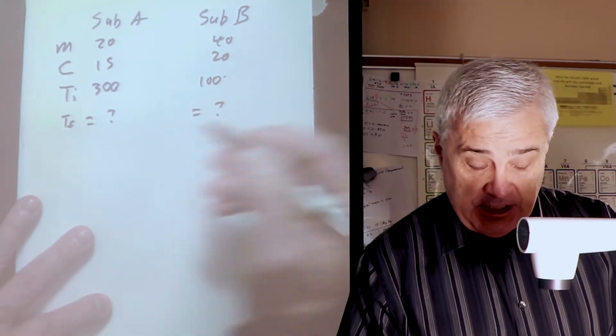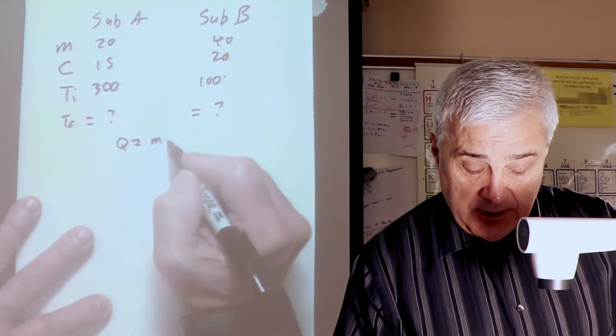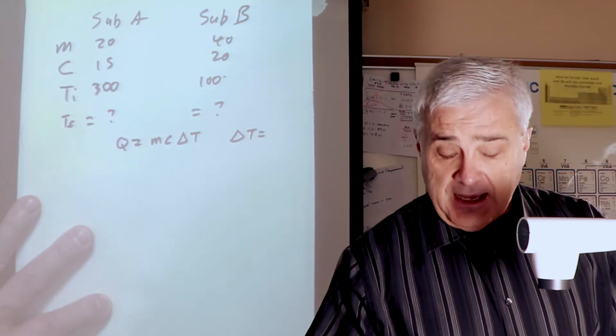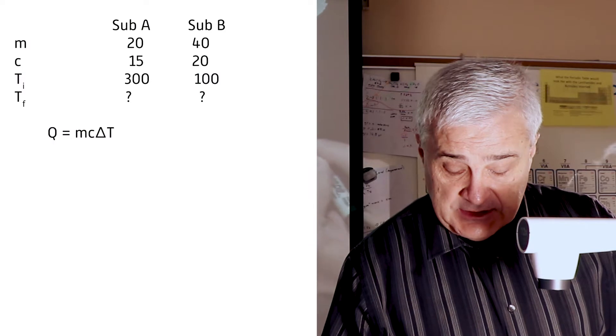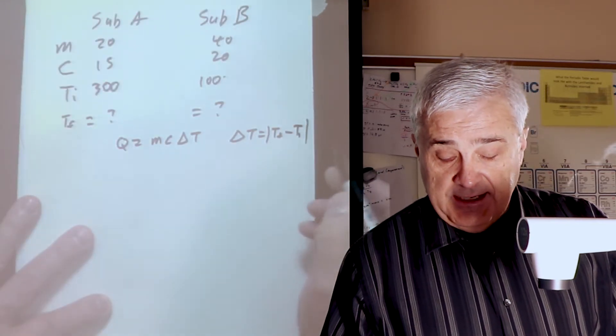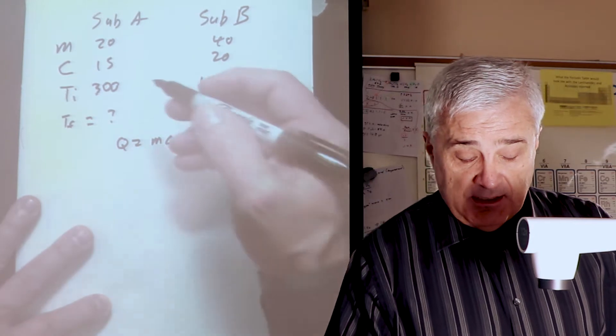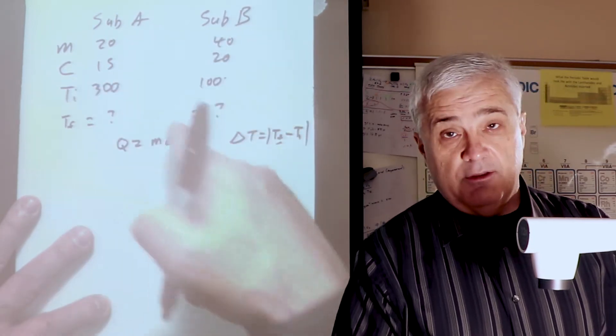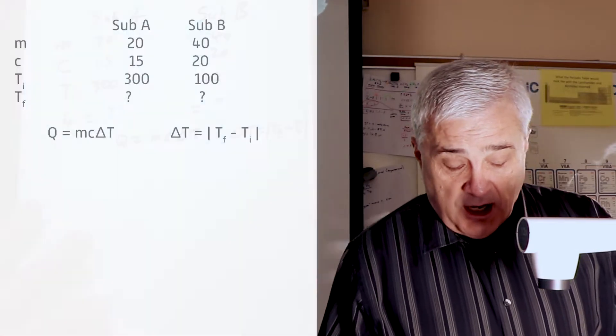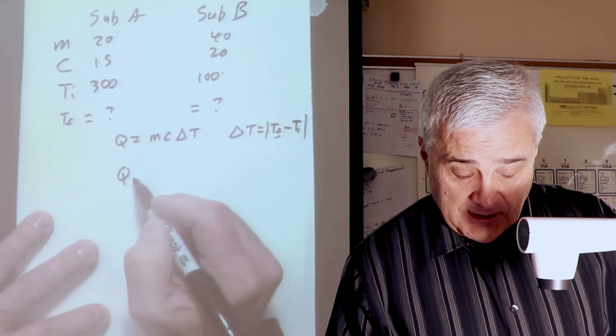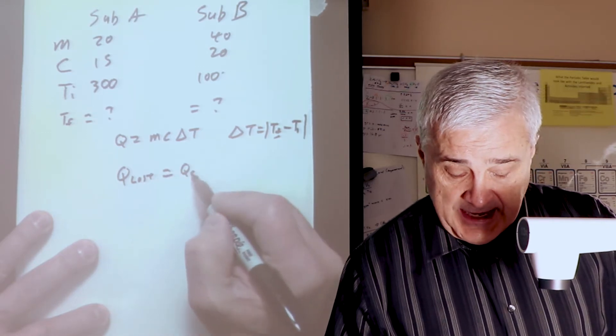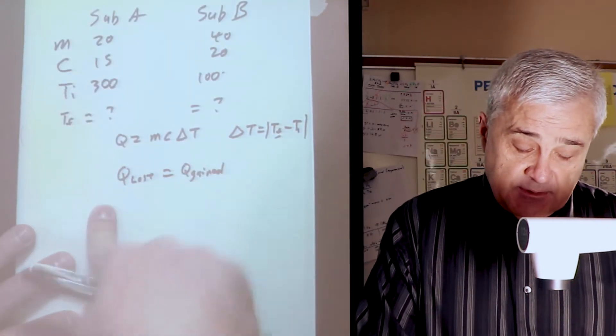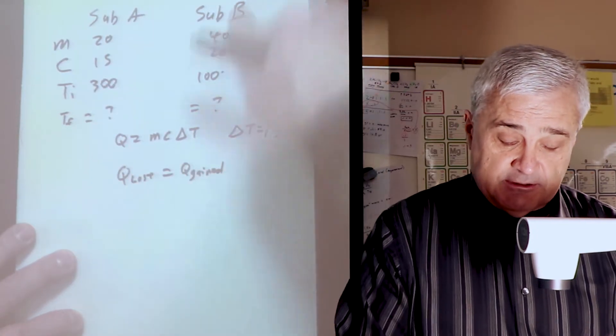Let's remember that the formula for energy is Q equals MC delta T, where delta T is the absolute value of the final temperature minus the initial temperature. Also, let's remember that heat lost equals heat gained.